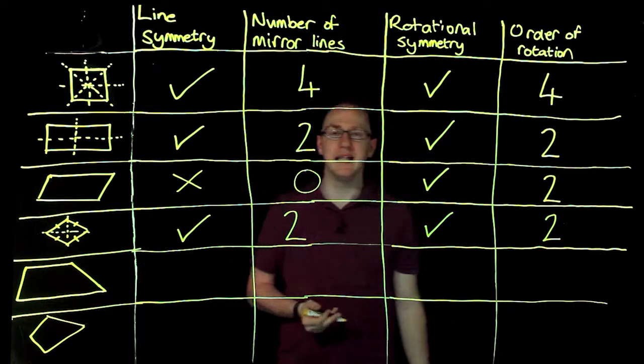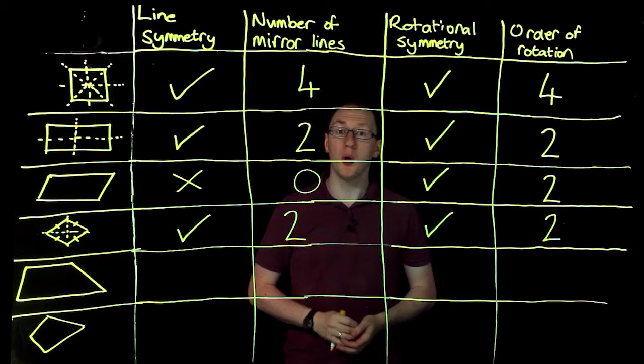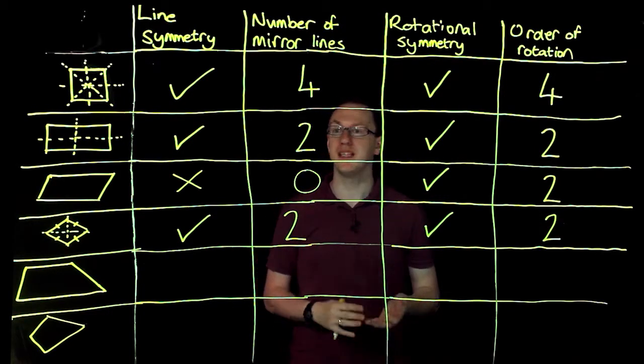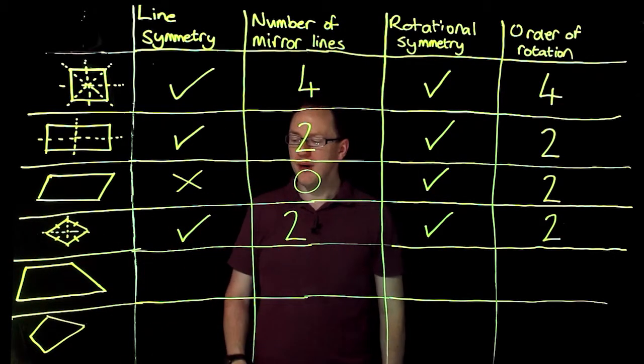Next I have my trapezium. Now when we're thinking about the line symmetries of a trapezium, we have a bit of a problem, because there are different types of trapezium. Now, this trapezium has no line symmetries at all. However,